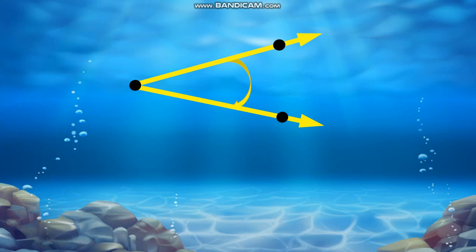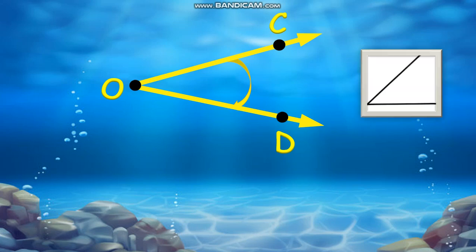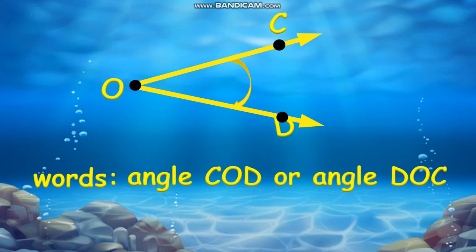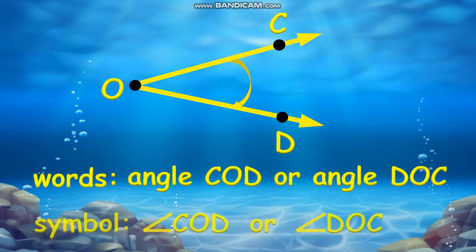There are ways to name an angle. First is the use of three letters. The center letter is the vertex and the other two letters are the points on each ray. The angle symbol is like this, so we can name the angle as angle COD or angle DOC, in both words and symbols.